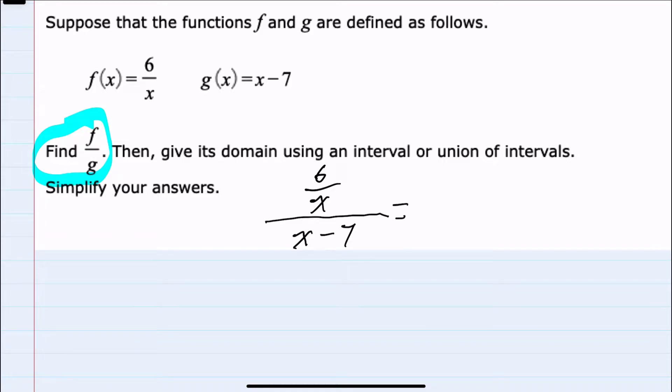And since this is a complex fraction where we have a fraction within a fraction, I'm going to rewrite it as 6 over x, which is the numerator. Instead of divided by x minus 7, I know that this is the same as multiplying by 1 over x minus 7.